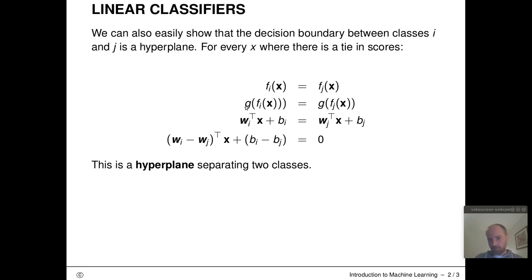If this is strictly monotonic, we can apply this to both sides of this equation. Then g(f_i(x)) is going to be the same as g(f_j(x)) if and only if this holds.